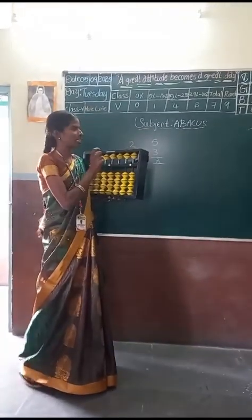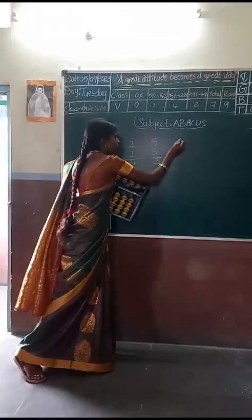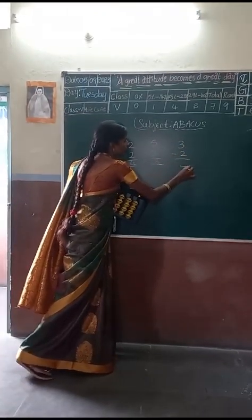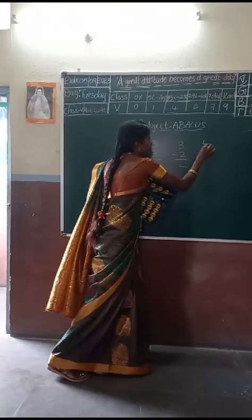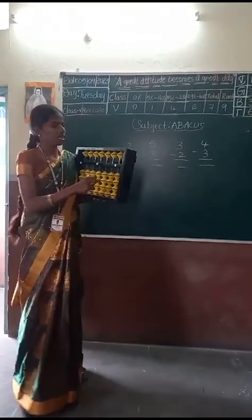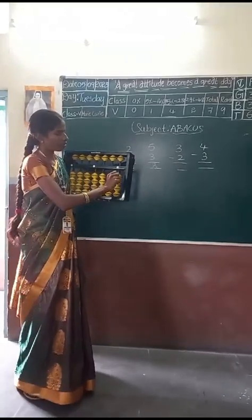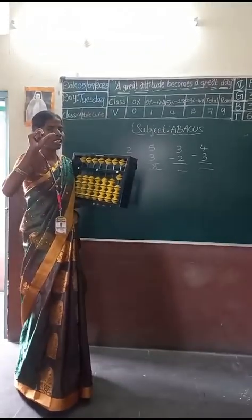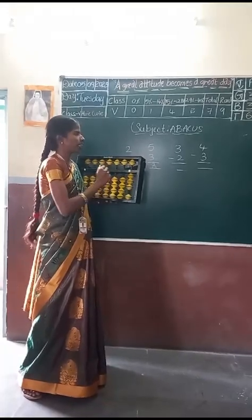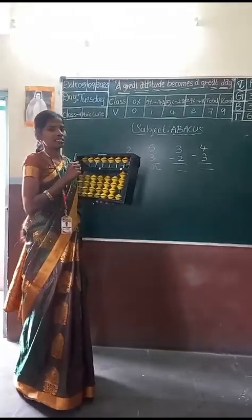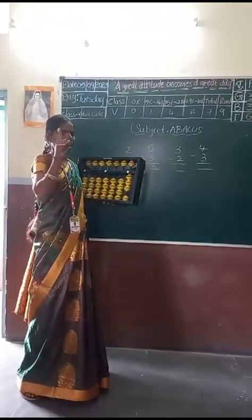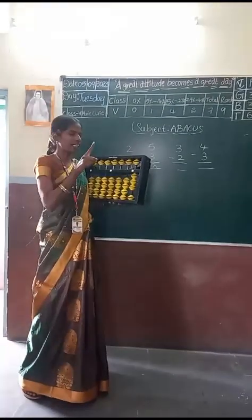Now, move to subtraction. 3 minus 2. 4 minus 3. First take 3: 1, 2, 3 — I am using only the thumb finger. Done. Now minus — minus means we have to take out. For minus, I can use the pointer finger.